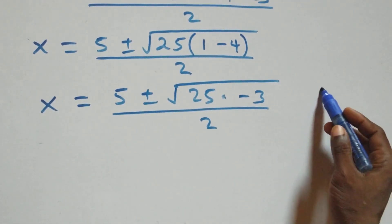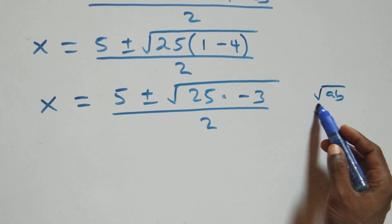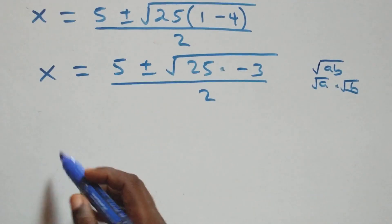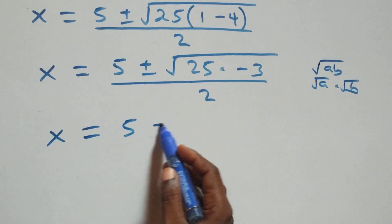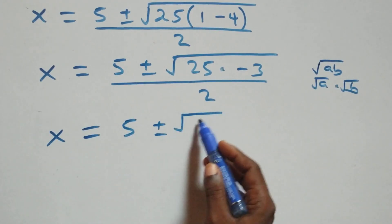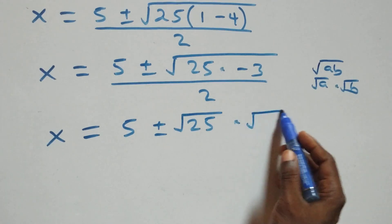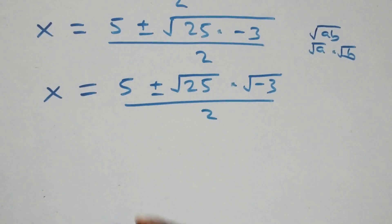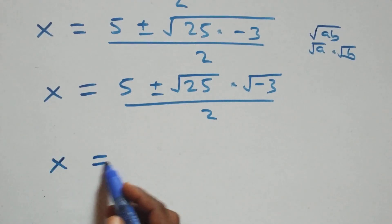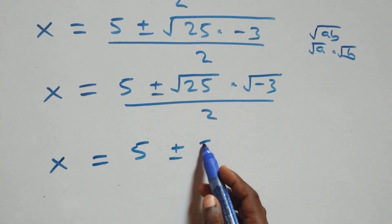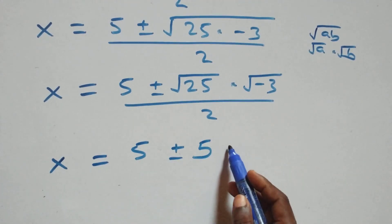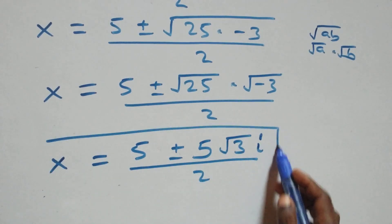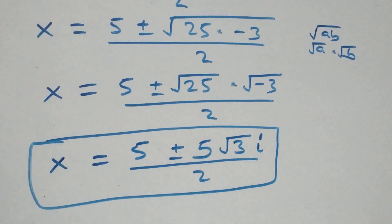Using the property that the square root of a times b equals root a times root b, we write x equals 5 plus or minus root 25 times root of negative 3, all over 2. Since root 25 equals 5, we get x equals 5 plus or minus 5 times i root 3, all over 2. These are two complex solutions from the first case.